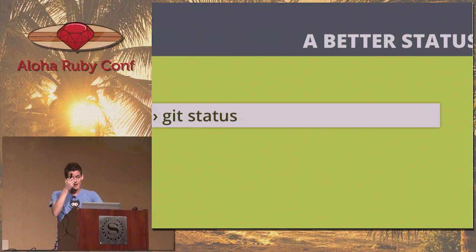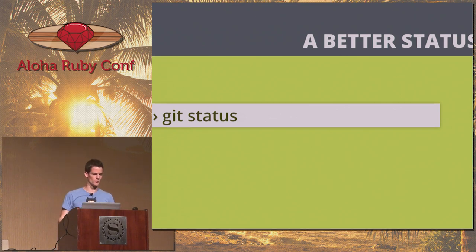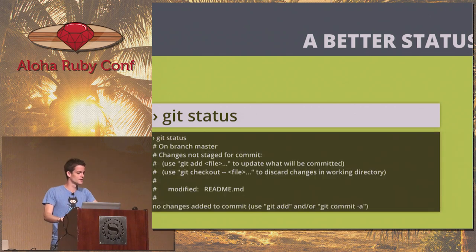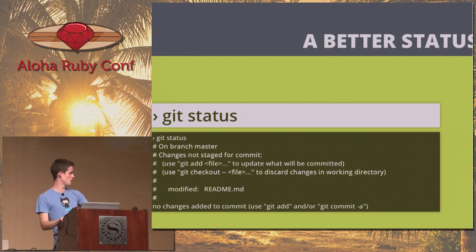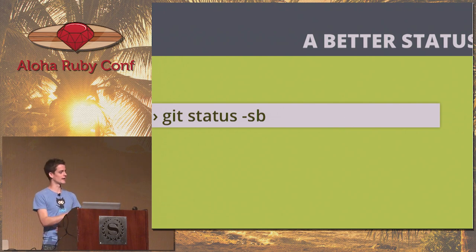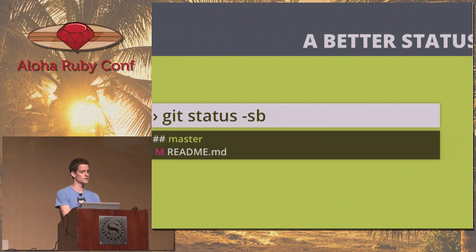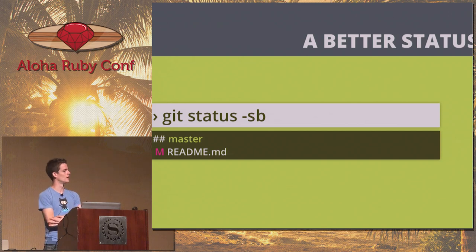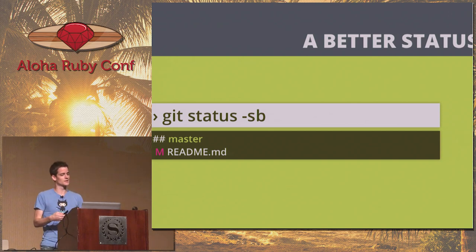Git status — recently they added a couple new features. The normal git status is boring. I alias git status to git status -sb, which gives you something with a bit more color, to the point, and directly what you want to see.